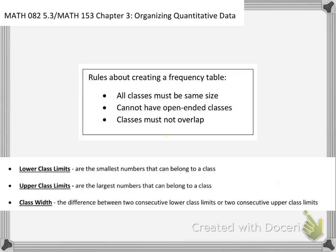The first thing to notice when we create a frequency table is that there are some rules. One of the rules is that all classes have to be the same size, and we haven't really formally defined classes yet and we're about to, and then that will make sense. We can't have open-ended classes, and lastly classes cannot overlap. Notice down here we also have definitions of lower class limits, upper class limits, and class widths. As we work through our next example we will learn exactly what that means.